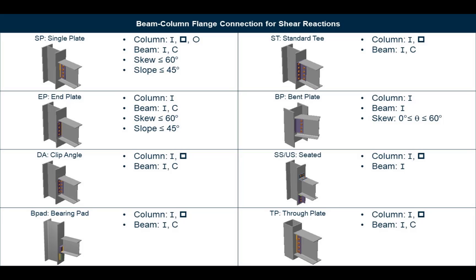If we were to review the RAM Connection database, we would see that there are several shear connectors available for beam-to-column flange joints for a variety of joint data and configurations. Please note that not all connectors may be available for each design code, and the RAM Connection help manual details which connectors are available for each design specification.